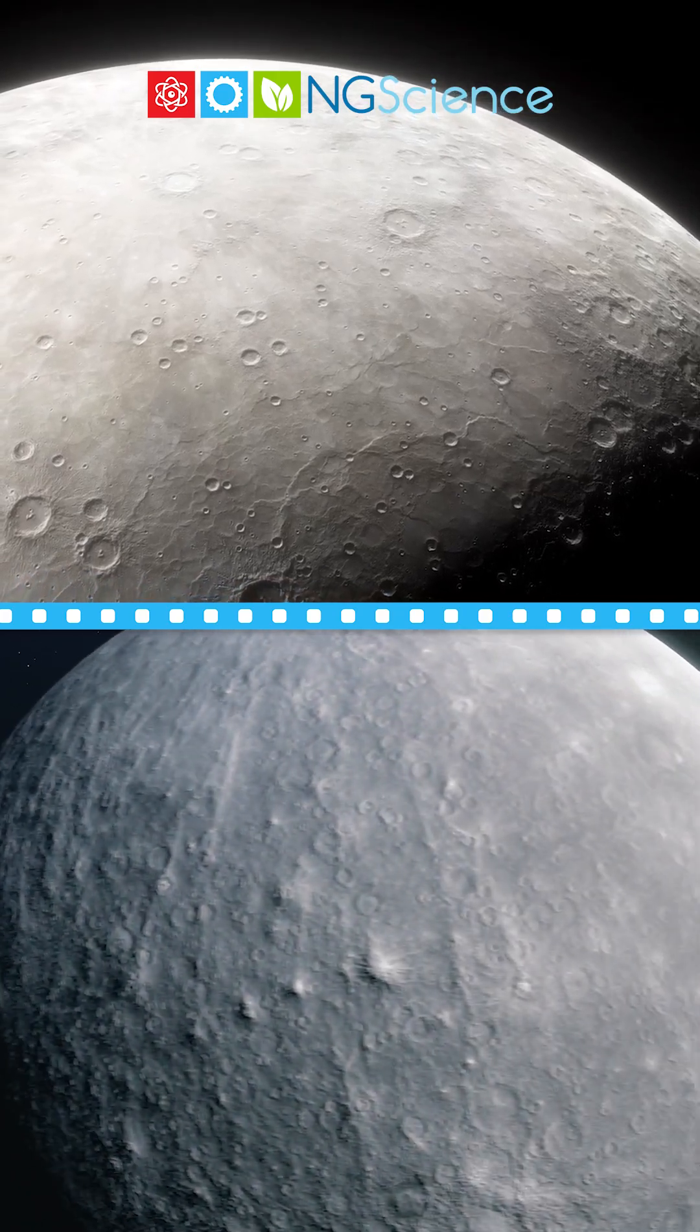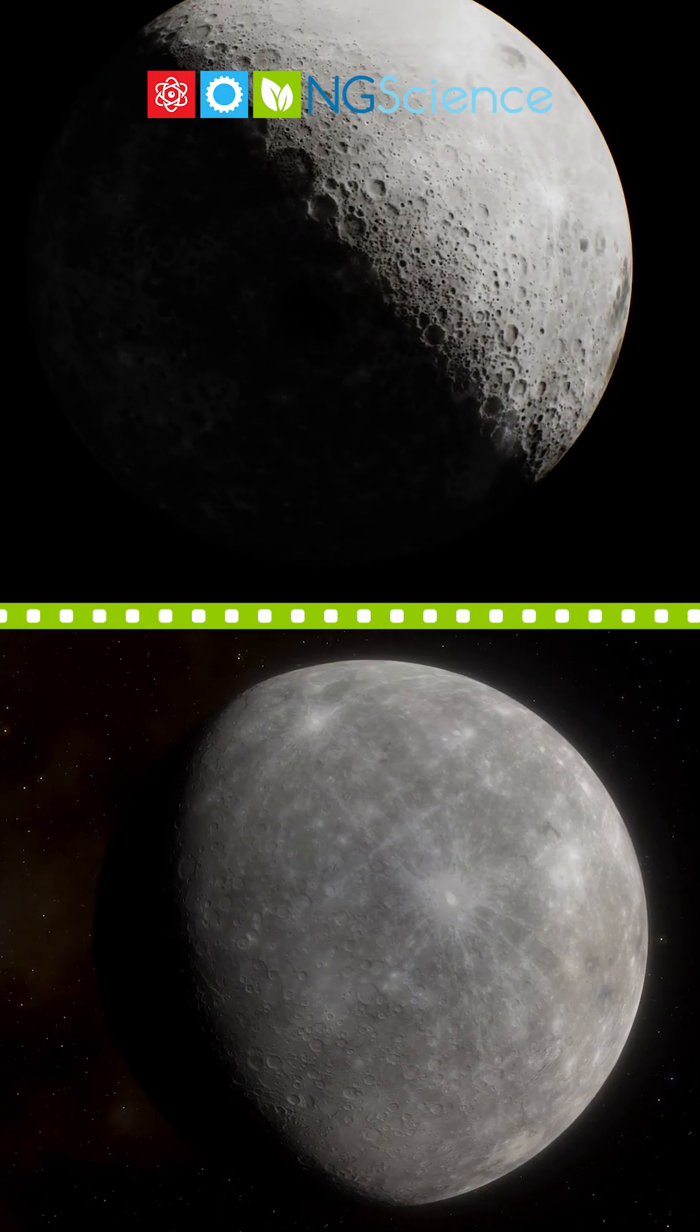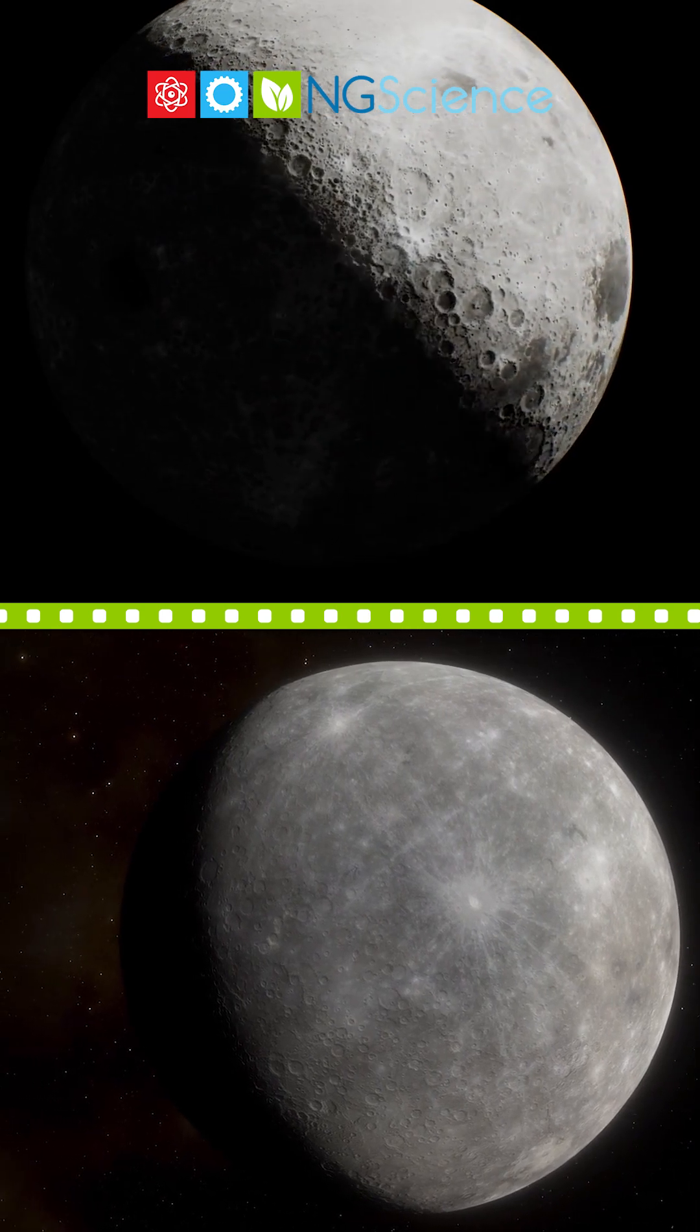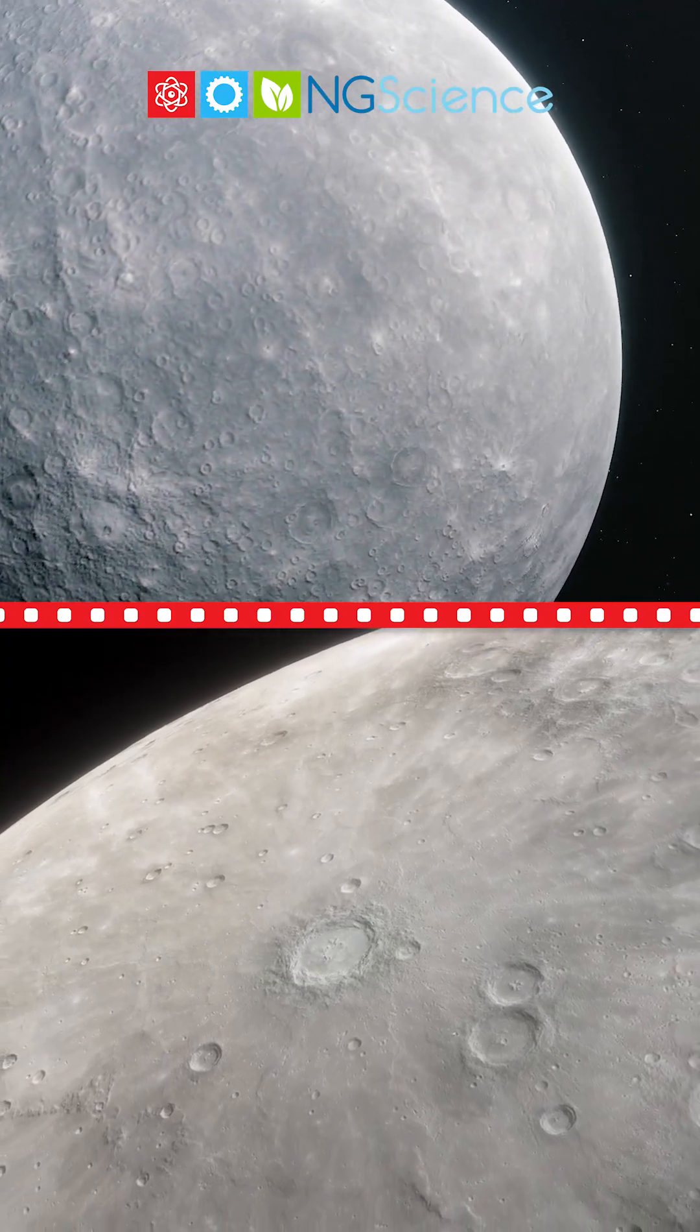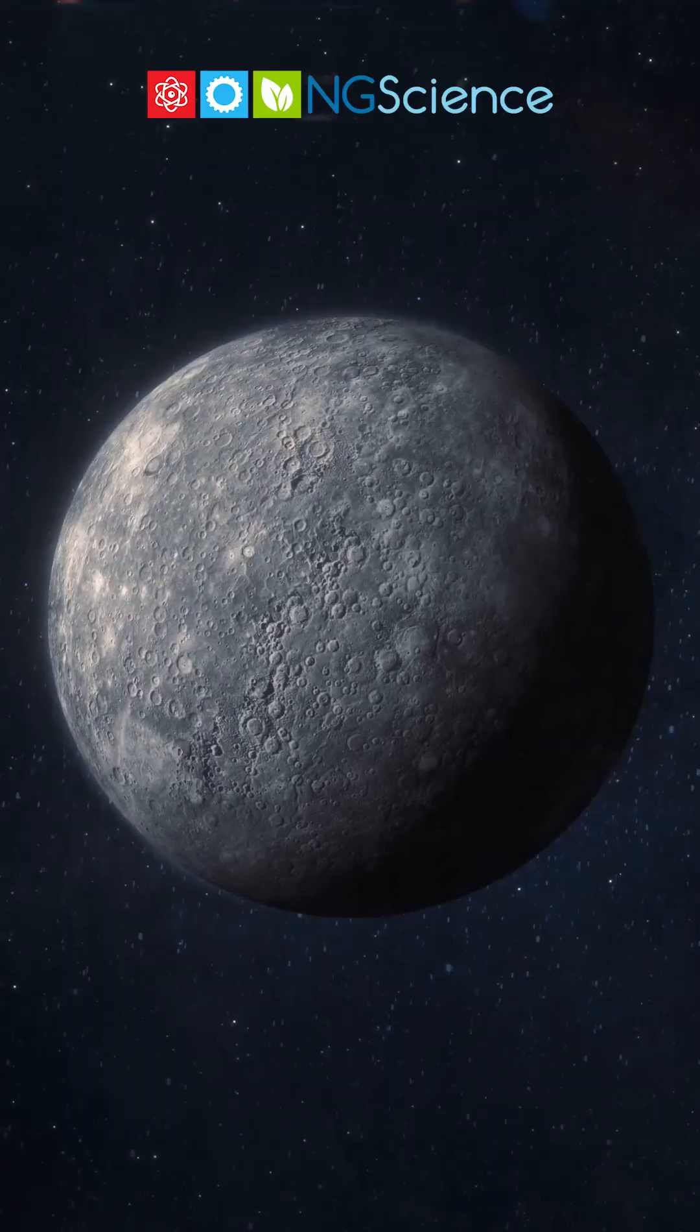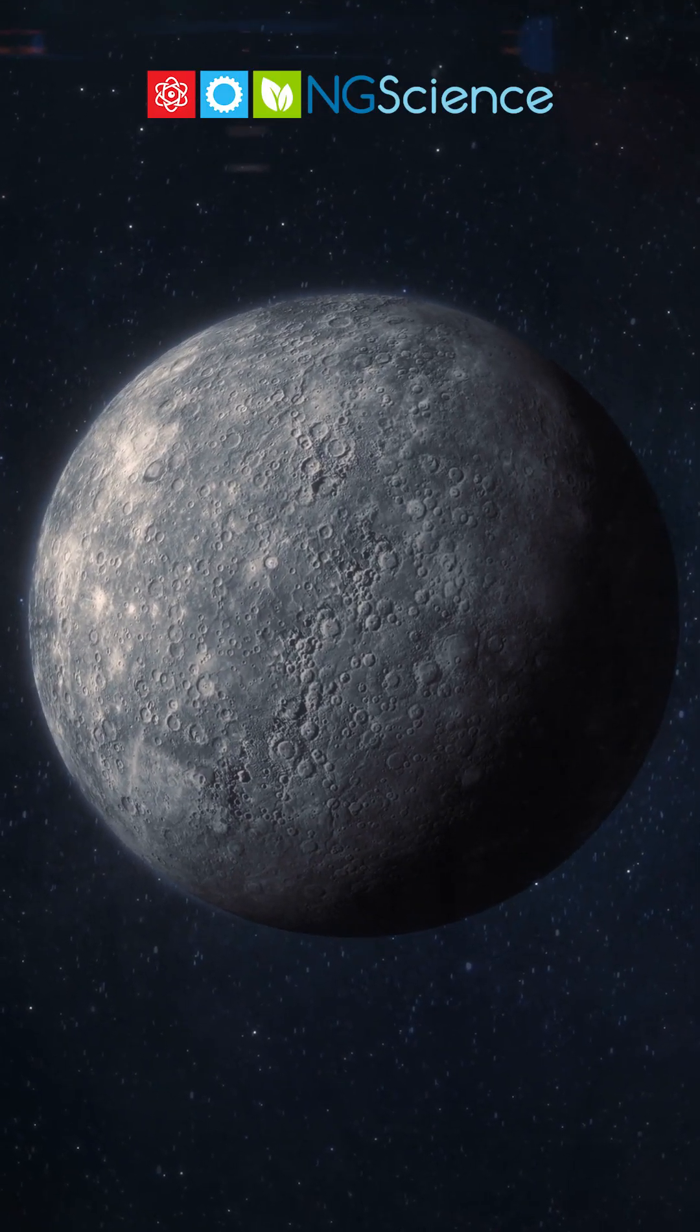First stop, Mercury. It's the tiniest planet and zooms around the sun faster than any other. Mercury has no atmosphere to keep it warm so it's boiling hot during the day and freezing cold at night.